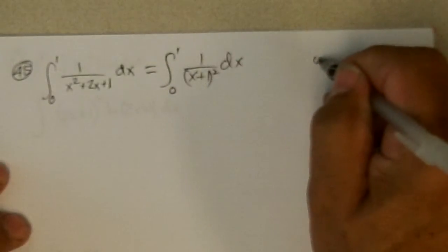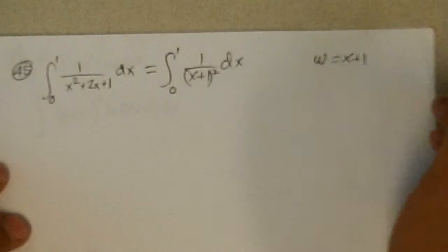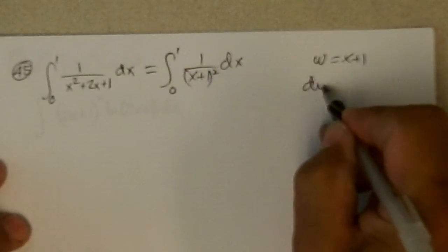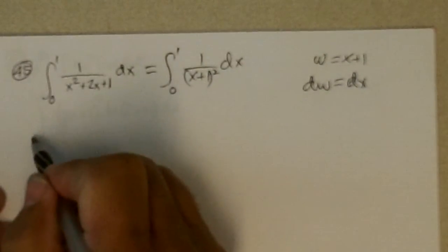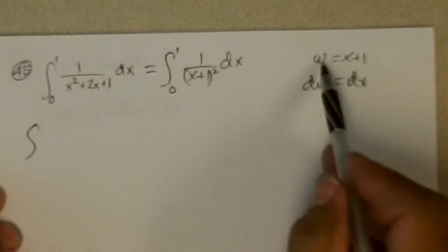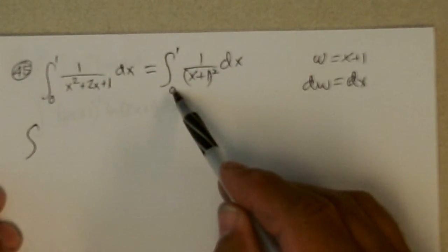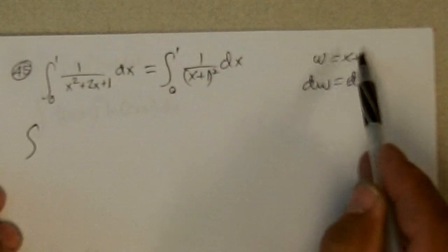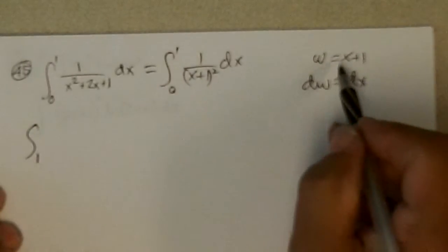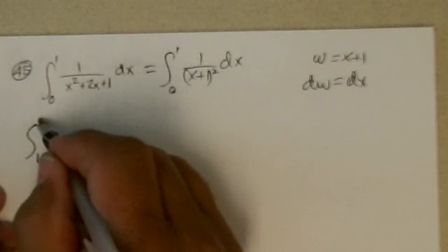And so if I just do a simple w equals x plus 1, dw equals dx, and I get the integral. Let's see, if x is 0, 0 plus 1 is 1. w goes from 1 to 1 plus 1 is 2, w goes to 2.